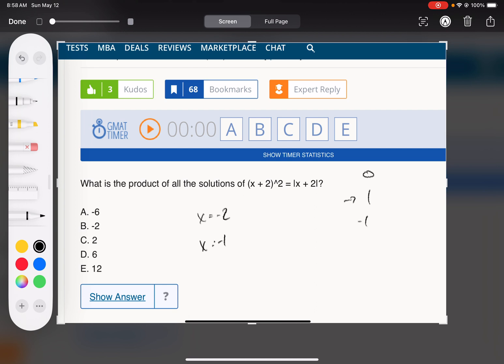And we can get these terms to negative one by making x negative three. So then negative one squared equals absolute value negative one. Yeah, that checks out. So these are the three solutions, so their product is negative six.